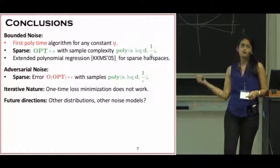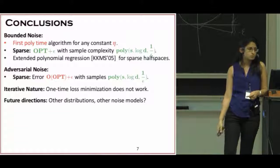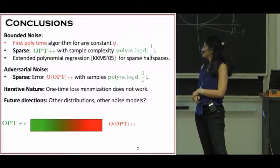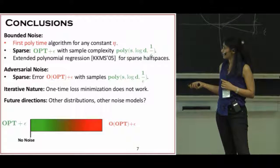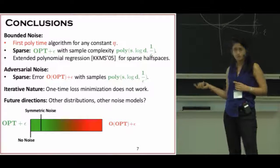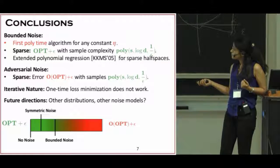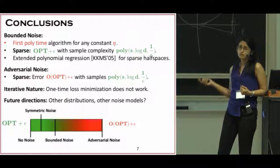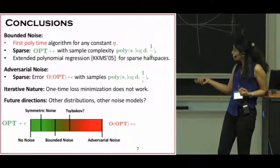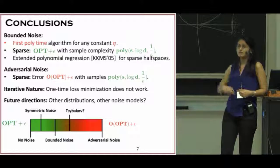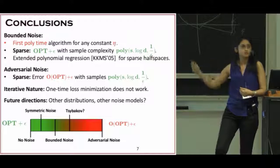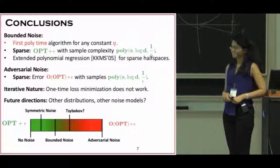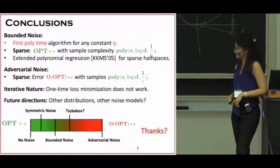In terms of future directions, what I told you was really for isotropic log-concave distributions. So naturally, can we do something for beyond those distributions? And also for other noise models. We know that for no noise or symmetric noise, things are pretty easy. We showed that for bounded noise, they're kind of easy when you have the log-concave distribution. And for adversarial noise, it's difficult. But there's a whole range of problems here. For example, Tsybakov noise. Can we give some sort of guarantees for these other noise models that fall in between? So those are the results that we have, and I would like to hear your thoughts and questions. Thanks.